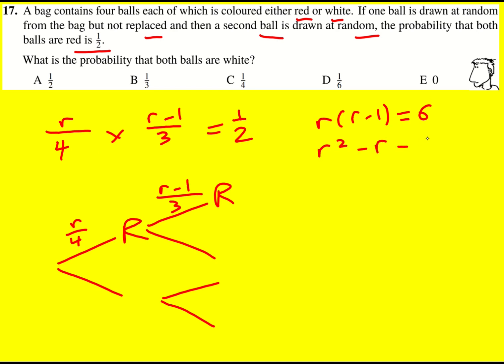R squared minus r minus six is equal to zero. So r minus three times r plus two factorize it equals zero. R equals minus two or three.